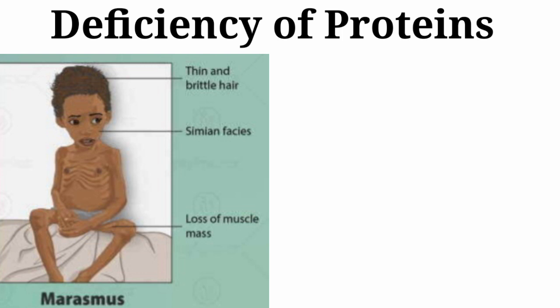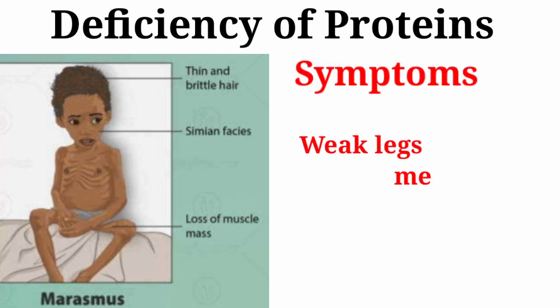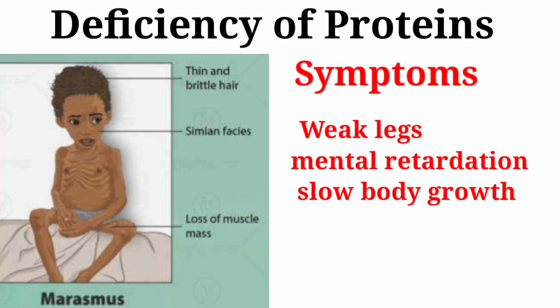Deficiency of proteins, carbohydrates, and fats causes marasmus in children. A child suffering from marasmus becomes very thin and shows the following symptoms: weak legs, mental retardation, and slow body growth.